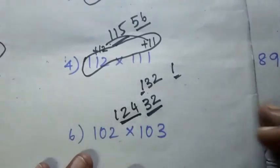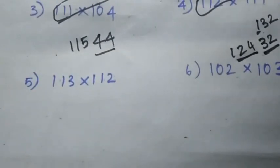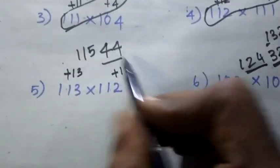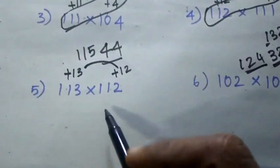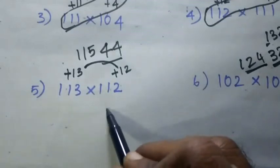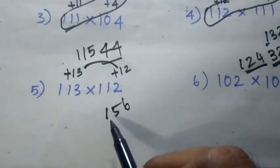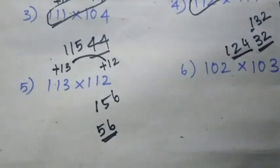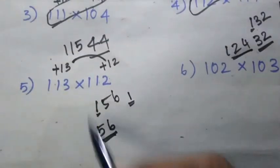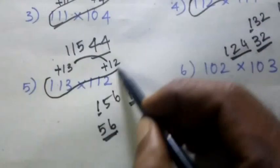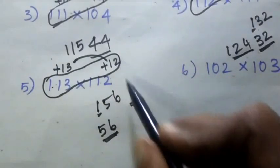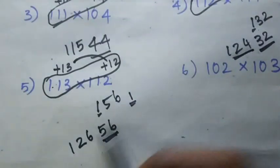124. So next, we can see the same model and try it. 13 into 12 is 156. We check how many digits — two digits. So 56. Next, cross: 113 plus 12 is 125, plus 1 is 126.